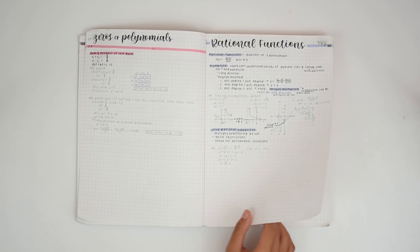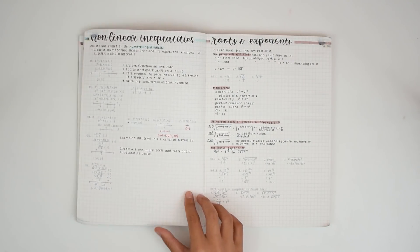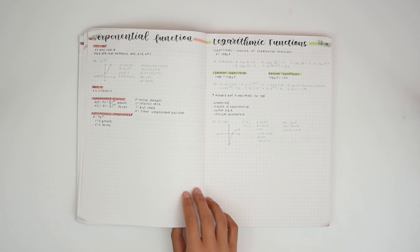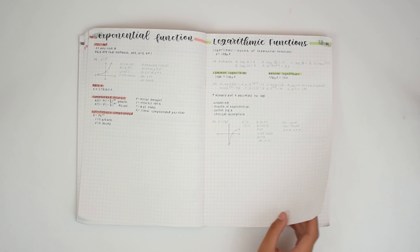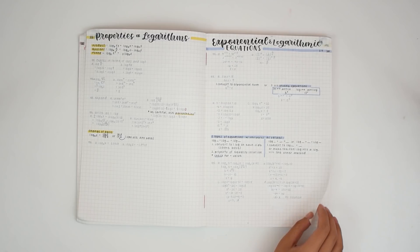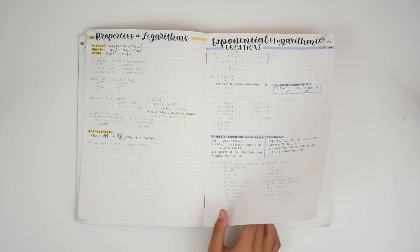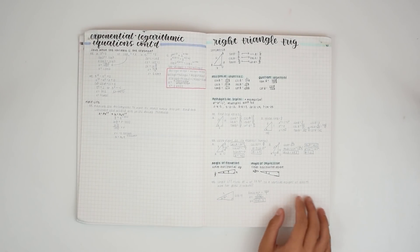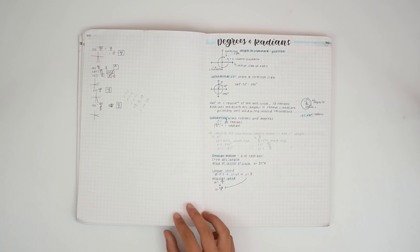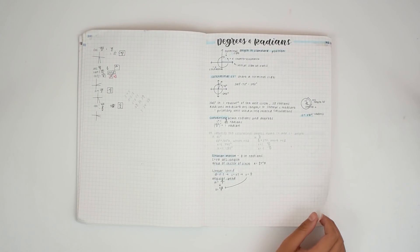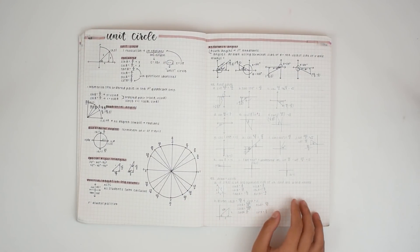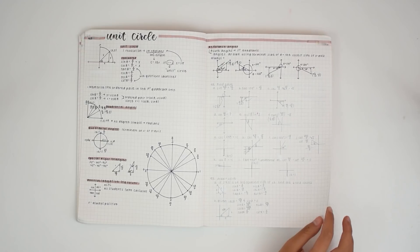And the highlighter colors I used are pretty much arbitrary. There is no color coding system or anything, although next year, I will probably change that and use the same color for each chapter. Towards the end of the year, which you'll see later in the flip through video, I stopped using the grey pen because it ran out of ink, and I found that visually separating the examples wasn't that important to me.